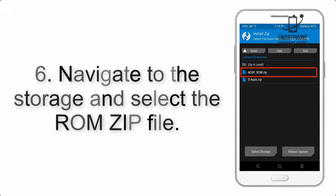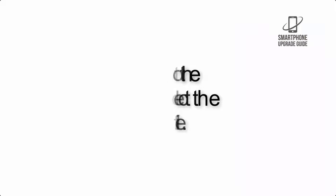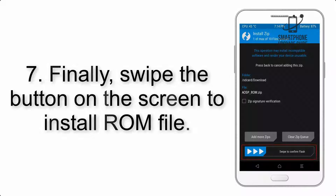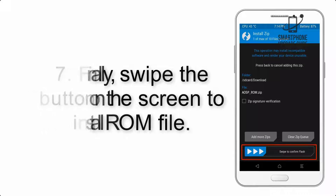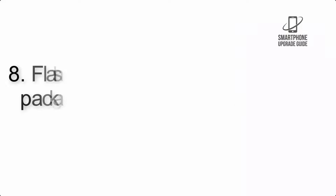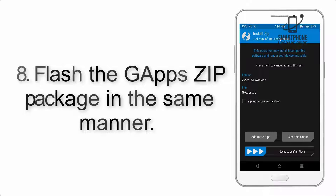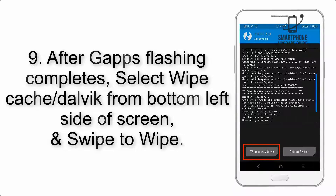Step 5: Go back to the recovery main screen and tap on the Install button. Step 6: Navigate to the storage and select the ROM zip file. Step 7: Swipe the button on the screen to install the ROM file. Step 8: Flash the GApps zip package in the same manner.